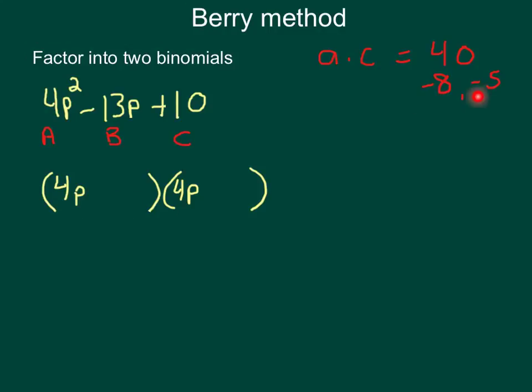Now, I have a negative 8 and a negative 5. Now, what I'm going to do is just write those in. Negative 8, negative 5. And it does not matter what order you put those in. Okay, now that I've got this, if I were to foil this one out, it would not give me this.